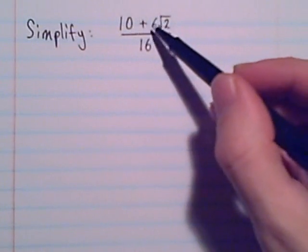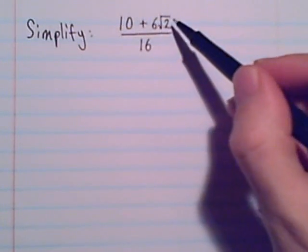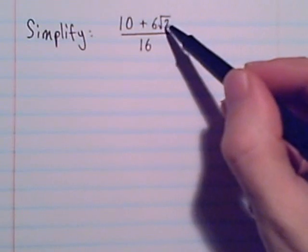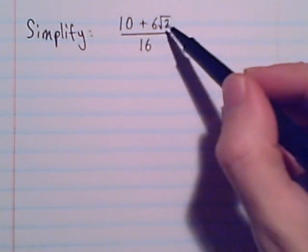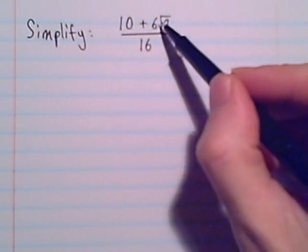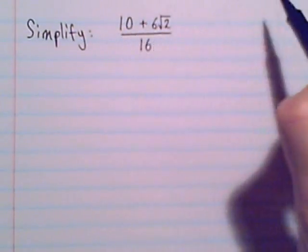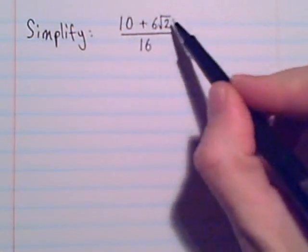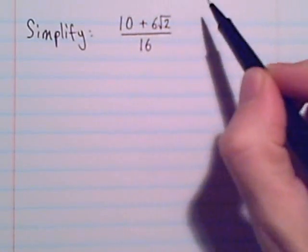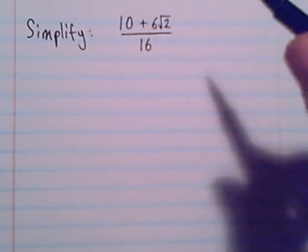We cannot add the 10 plus 6 because this 6√2 is an irrational number with a radical part. Bottom line: you can't add numbers if one has a radical part and the other one does not. So these are not like terms. Avoid any thoughts of 'well, I should add or do something to the numerator.'